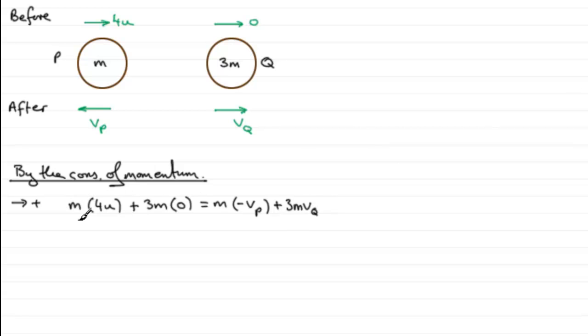Now, m is in every term, so we could cancel that out, simplify the problem. And what else can we do? Well, this is going to be zero, isn't it? So we've got, therefore, 4u equals minus VP plus 3 VQ. Now at this stage, I'd want to make VQ the subject. I'm going to work off VP in the next part. So let's make VQ the subject. So if I add VP to both sides, we've got 3 VQ equals 4u plus VP and then divide by 3. So we therefore have that VQ equals 4u plus VP all divided by 3. We'll call that equation 1.